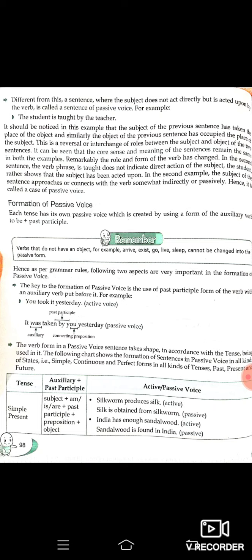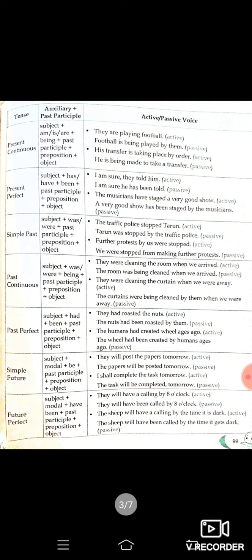The verb form in a passive voice sentence takes shape in accordance with the tense being used. The following chart shows the formation of sentences in passive voice in all kinds of tenses — past, present, and future — and in simple, continuous, and perfect forms. For example: 'Silk worm produces silk' (active) becomes 'Silk is obtained from silk worm' (passive). 'India has enough sandalwood' (active) becomes 'Sandalwood is found in India' (passive). You have to read this page once and you will surely understand.